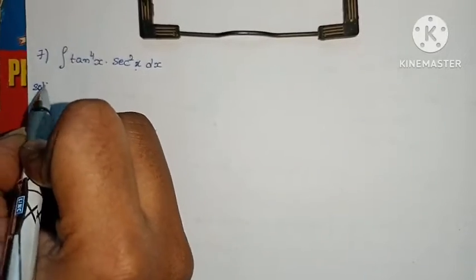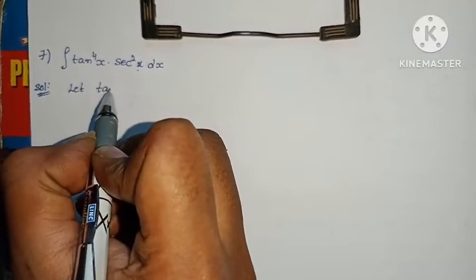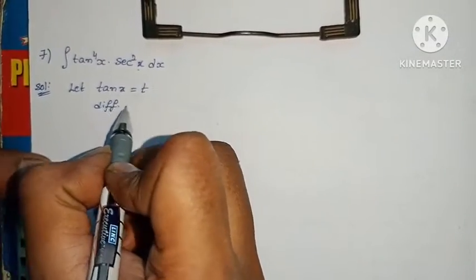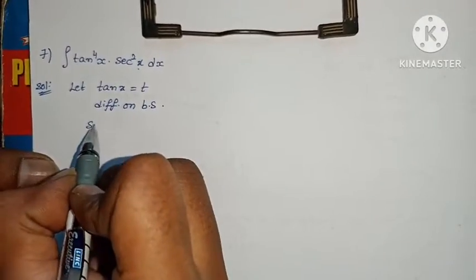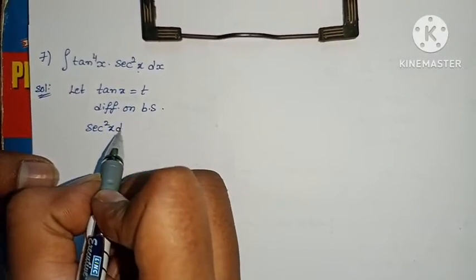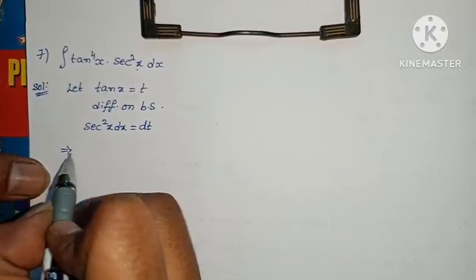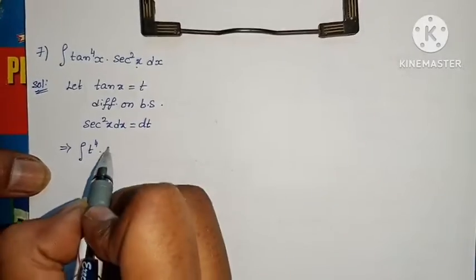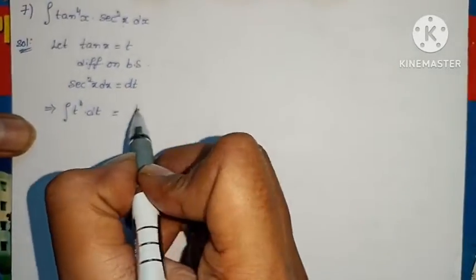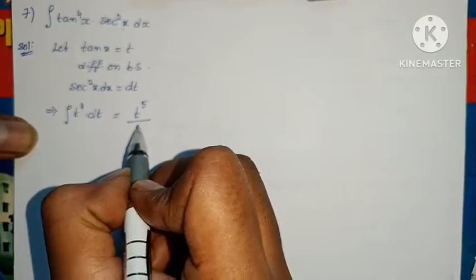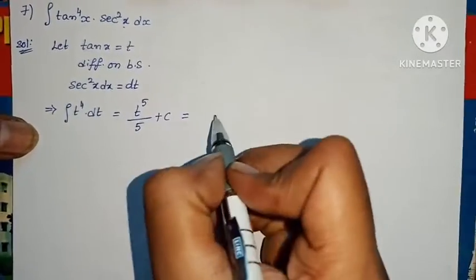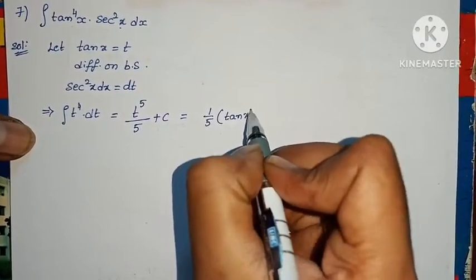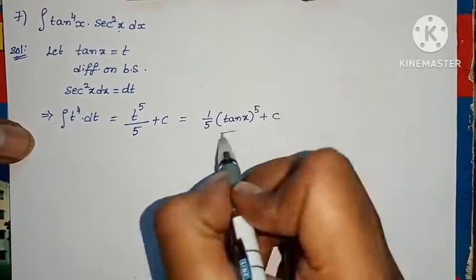Next problem: integral of tan⁴x · sec²x dx. Since d/dx of tanx = sec²x, let tanx = t. Differentiating: sec²x·dx = dt. The integral becomes integral of t⁴·dt = t⁵/5 + c. Back-substituting t = tanx: (1/5)·tan⁵x + c. Problem complete.